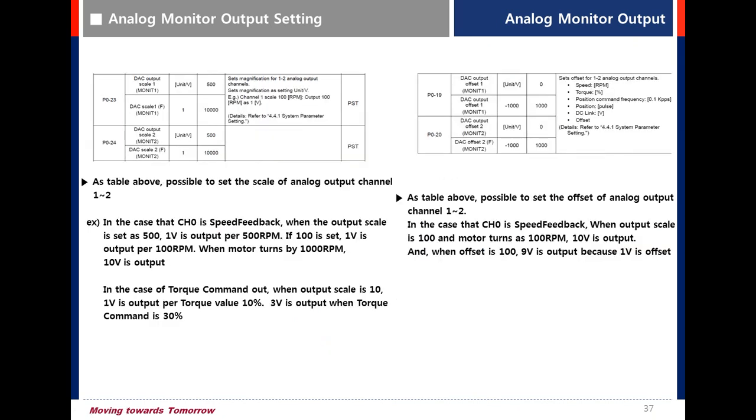Setting the scale of analog output: If channel 0 is speed feedback, the default value is 500. This means when the speed reaches 500,